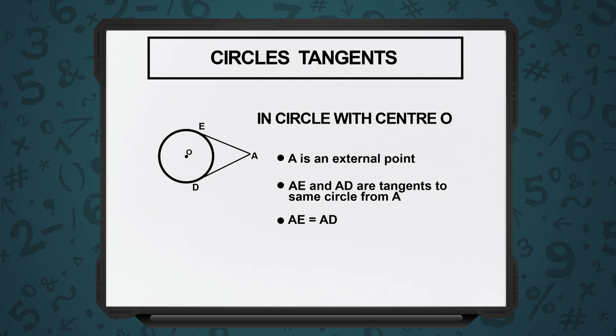One will be across one edge of the center, the other one will be to the other end from the center. So from the same external point, we are in a position to draw two tangents to a particular circle.